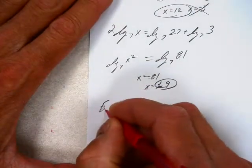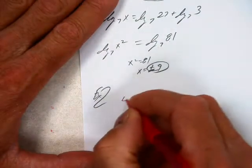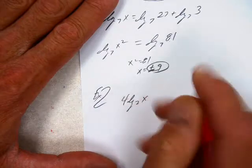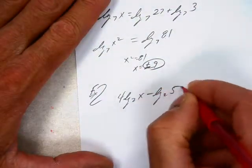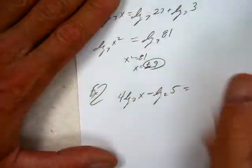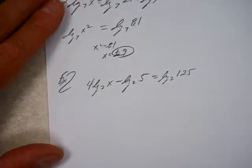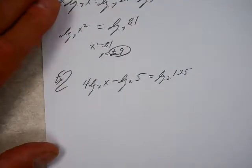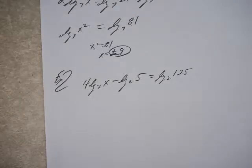Last one. 4 log base 2 of x minus log base 2 of 5 equals log base 2 of 125. Go, give it a shot.